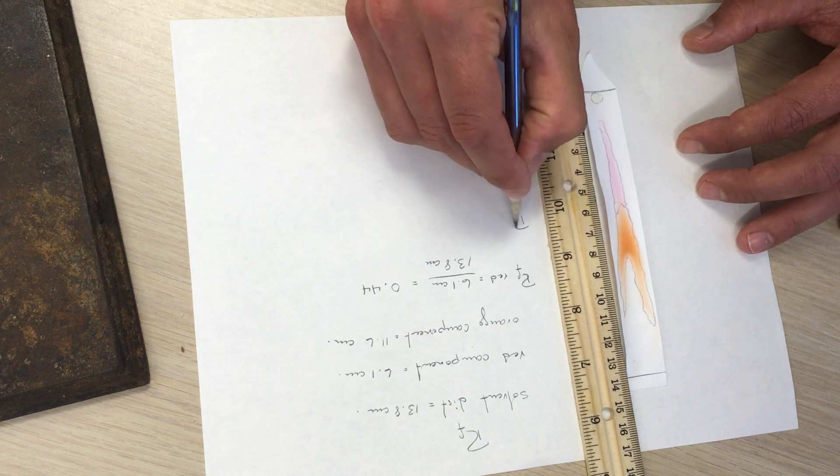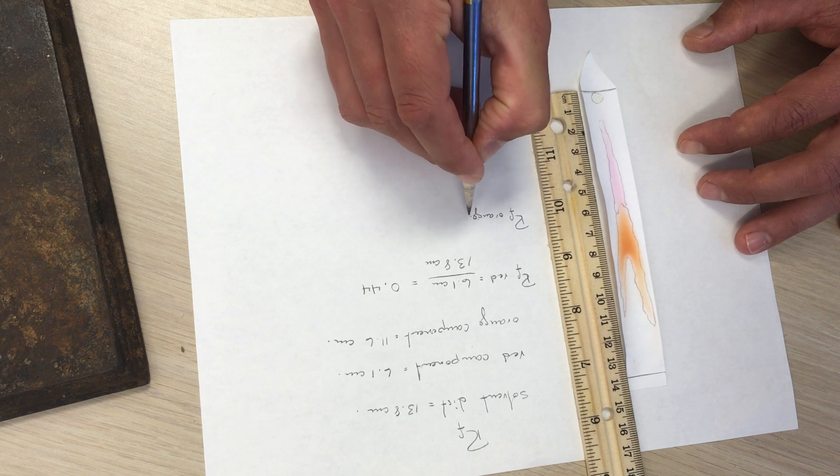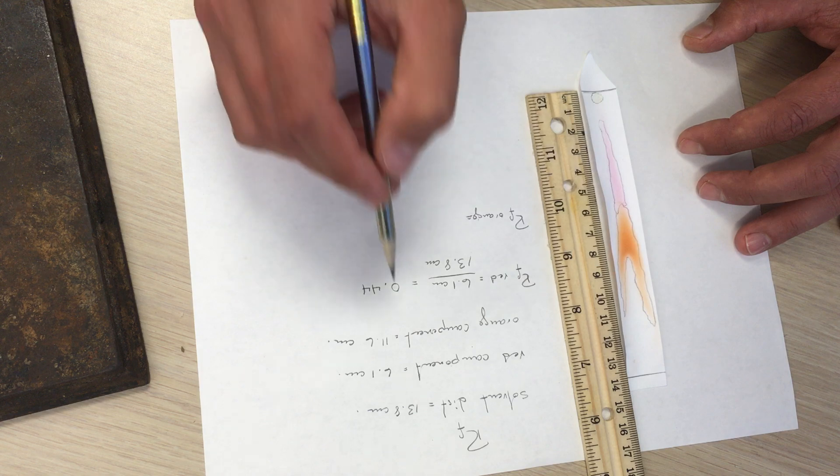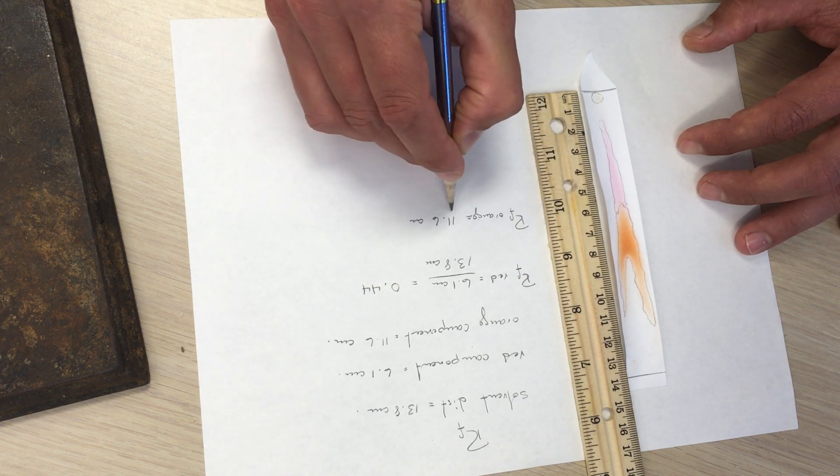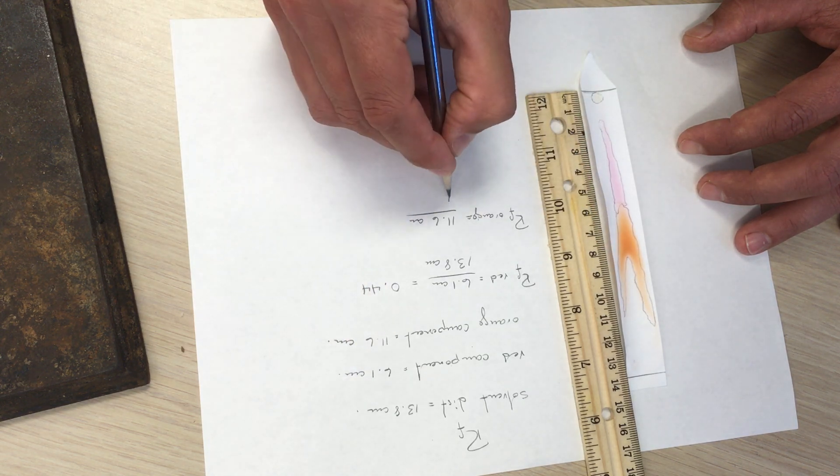We can calculate the RF for the orange color, which is the distance traveled by the orange component. So we have 11.6 centimeters divided by the distance traveled by the solvent, which is 13.8.